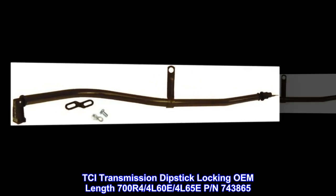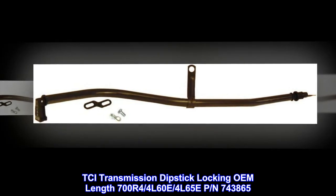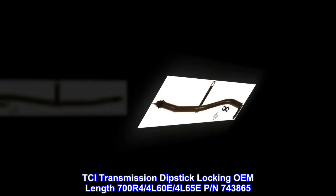TCI Transmission Dipstick Locking OEM Length 700R4/4L60E, 4L65E P/N 743865